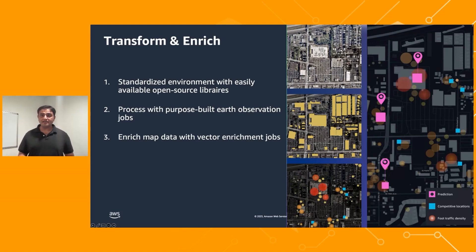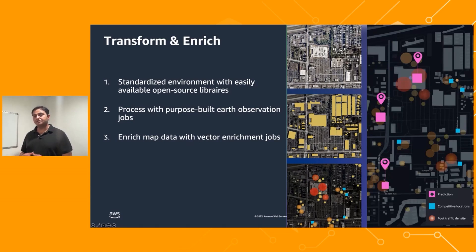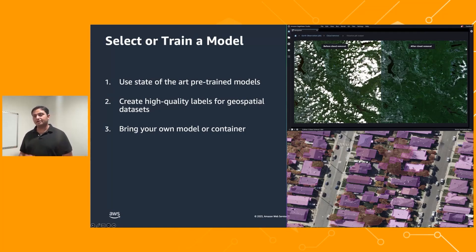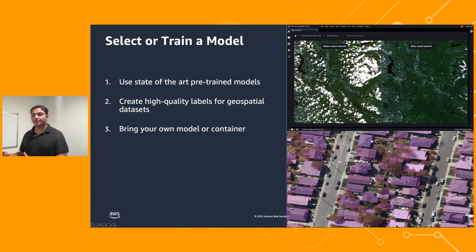If you are working with GPS coordinates and need to augment them with address information or the road segment where they were collected, you can kick off vector enrichment jobs to bring all of that information together. Now that you have transformed and enriched data, you can start making predictions by leveraging purpose-built models that come inside SageMaker. For basic operations like cloud masking, cloud removal, and land use land cover classification, you can simply use one of the pre-integrated models.